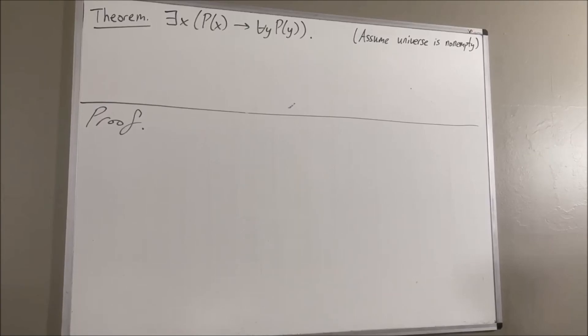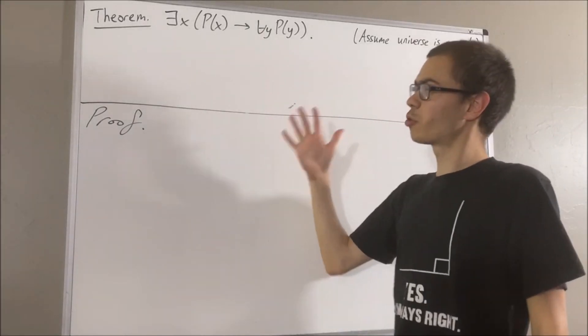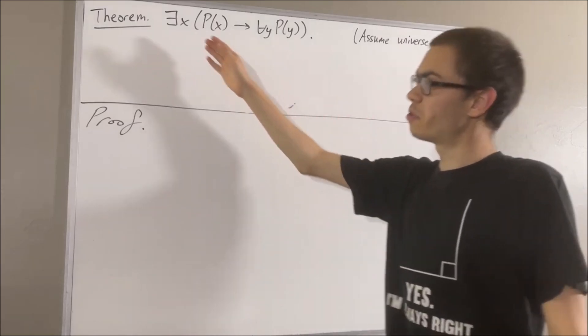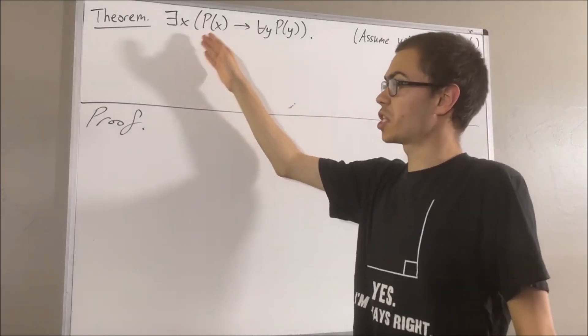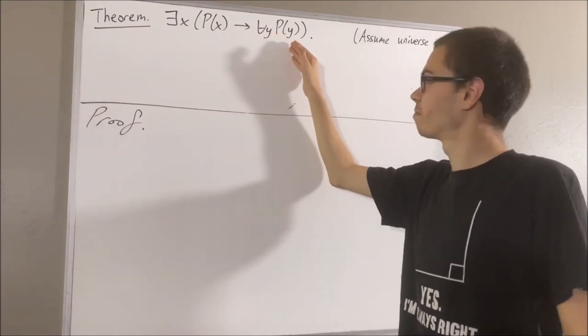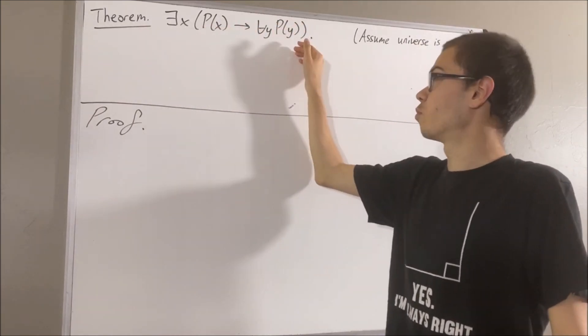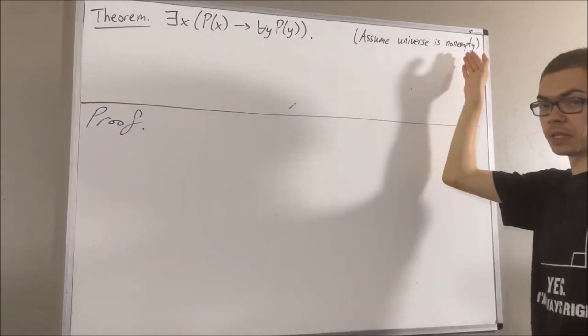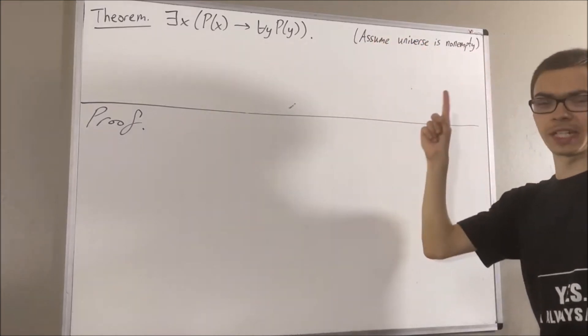Hello! In this video, we are going to prove the following theorem: There exists an object X such that if P of X, then for all Y, P of Y. In proving this theorem, we are going to assume our universe is non-empty, so there is at least one object out there.